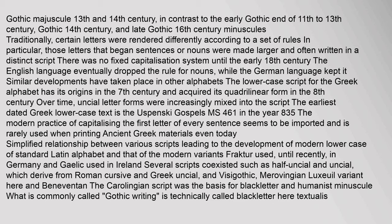European languages, except for ancient Greek and Latin, did not make the case distinction before about 1300. The timeline of writing in Western Europe can be divided into four eras: Greek majuscule (9th–3rd century BC), Gothic majuscule (13th–14th century), Gothic (14th century), and late Gothic (16th century) minuscules. Traditionally, certain letters were rendered differently according to a set of rules — in particular, those letters that began sentences or nouns were made larger and often written in a distinct script.